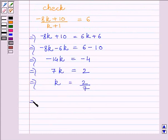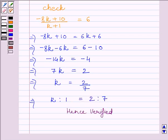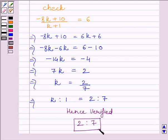This implies the ratio K is to 1 is equal to 2 is to 7, which verifies our answer. So our required answer is 2 is to 7. This completes the session. Hope you understood. Take care and have a nice day.